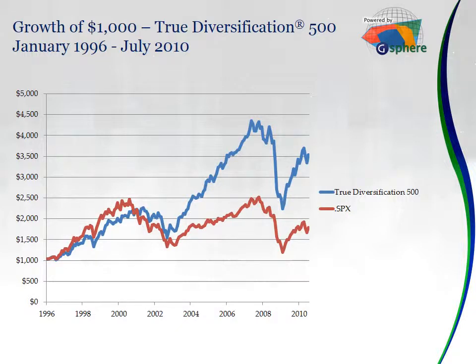We've got less risk by any statistic. Full sample — all 15 years — we were, I believe, 499 incremental basis points over the index. We're just pretty vastly a superior product.